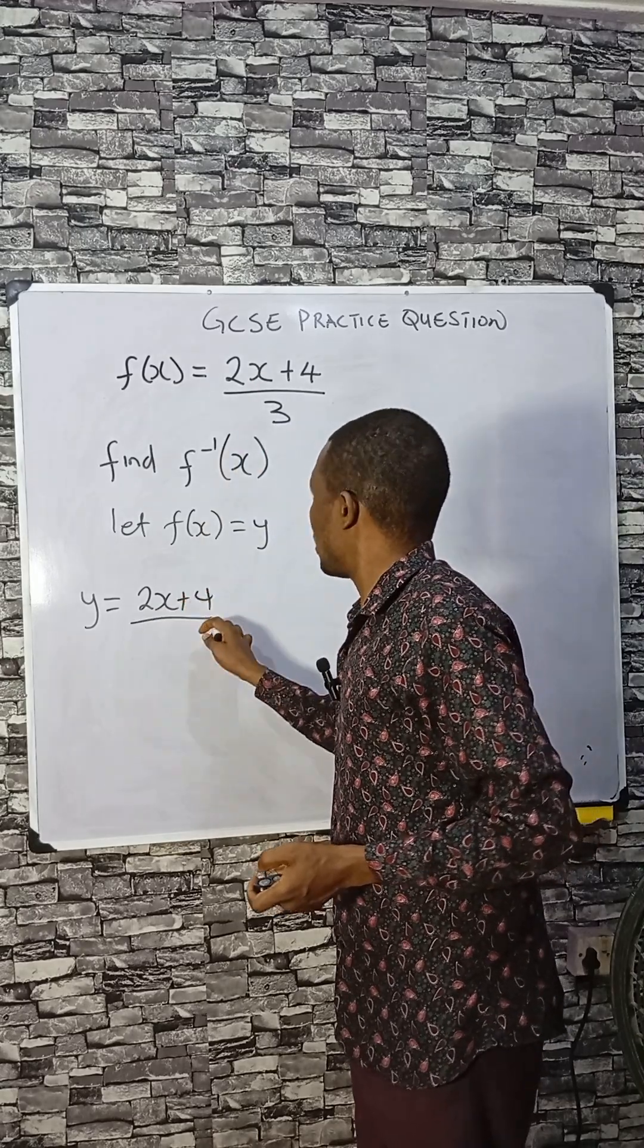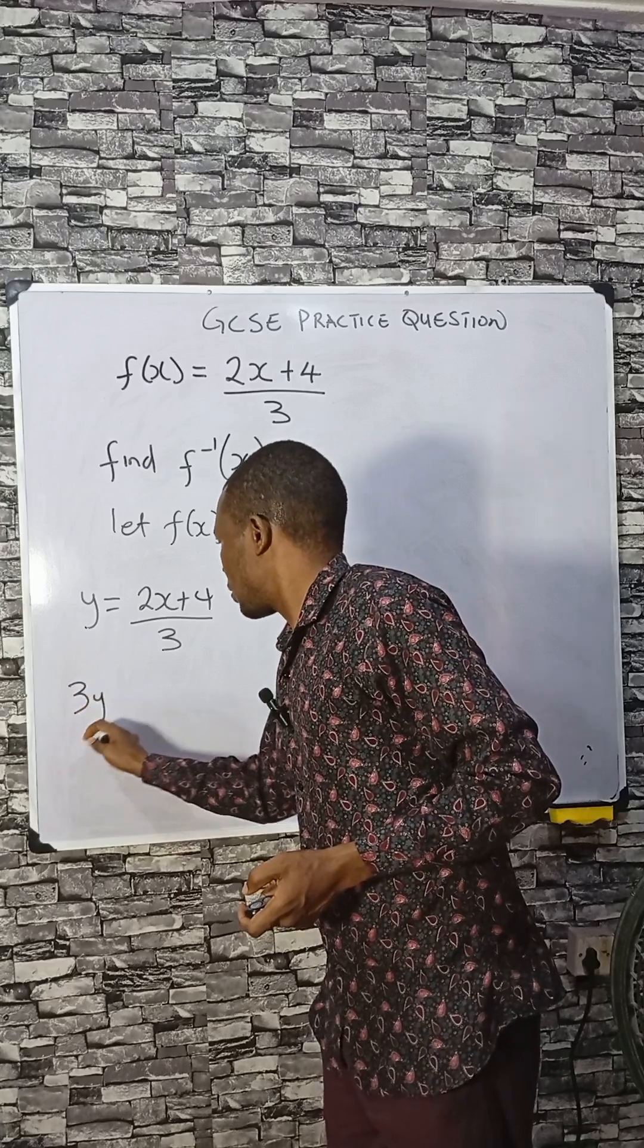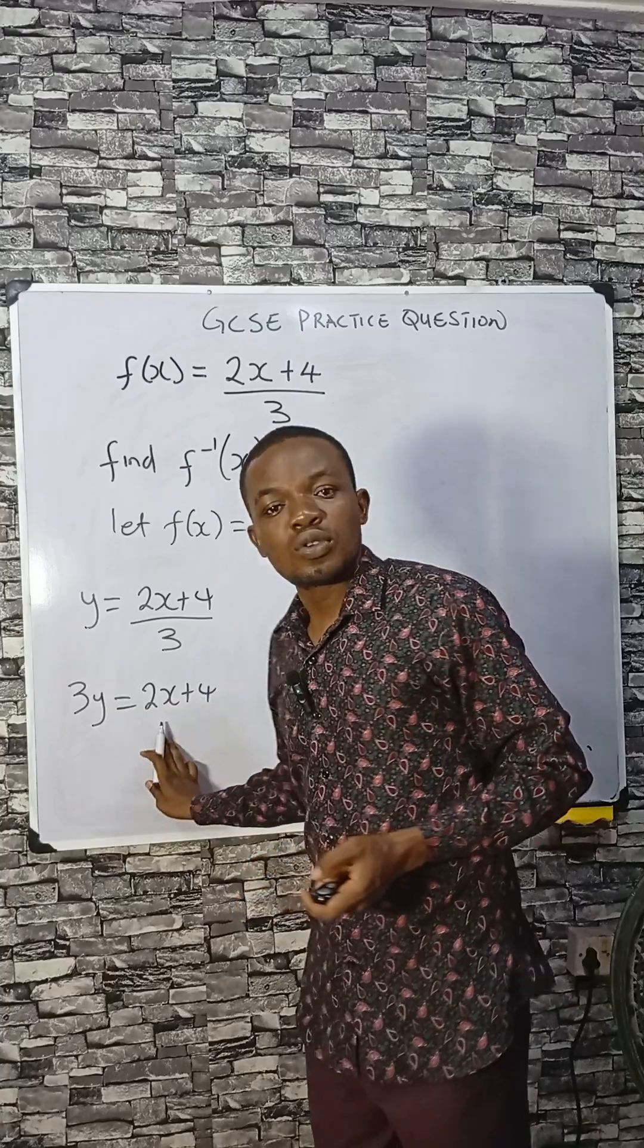Now cross multiply to have 3y equals 2x plus 4. Here you solve for x.